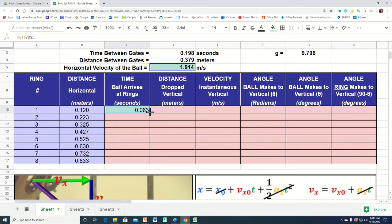So if I select that formula and copy that formula all the way down it's going to take about six hundredths of a second to go that far and it's going to take about 0.435 seconds to go that far. But we know the time it's going to arrive at each of these rings.